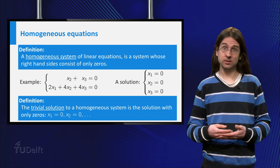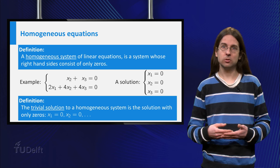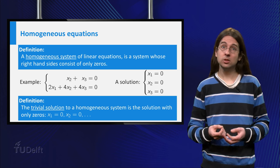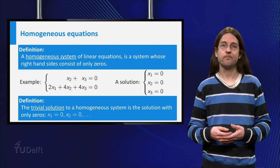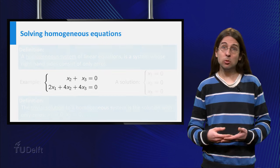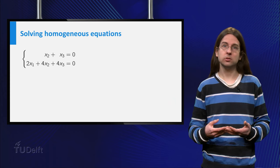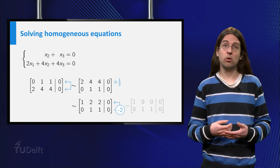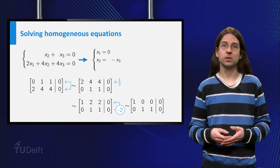One of the questions you can wonder about is whether there are more solutions than just this one. Those other solutions are called the non-trivial solutions. To solve this set of homogeneous equations we follow the process you learned earlier: first write it in an augmented matrix form and then use row reduction to obtain an echelon form.